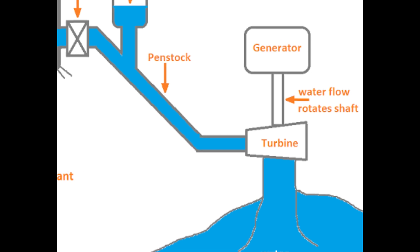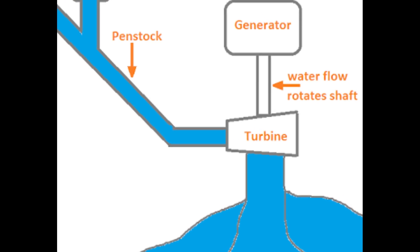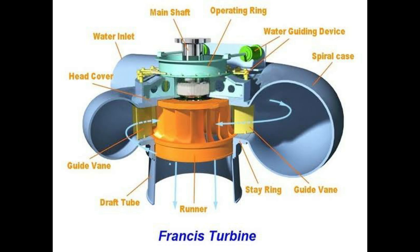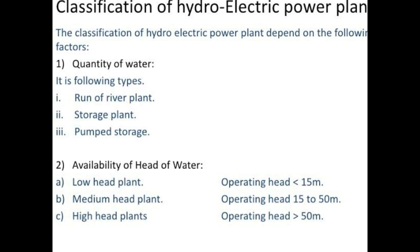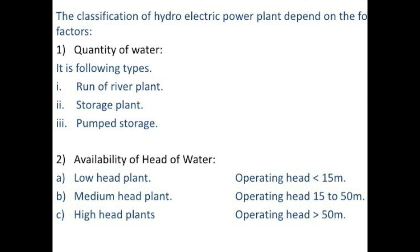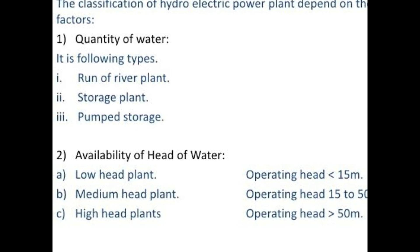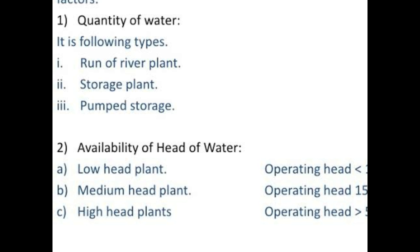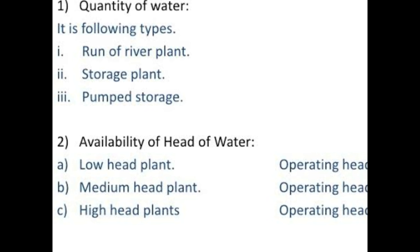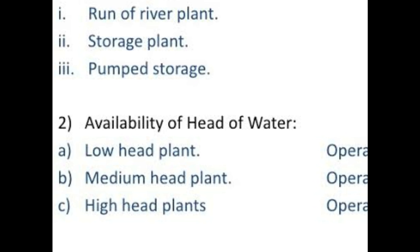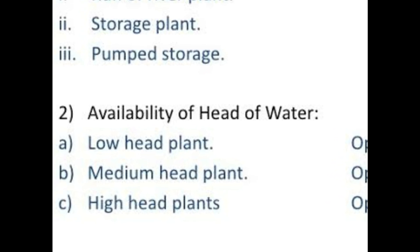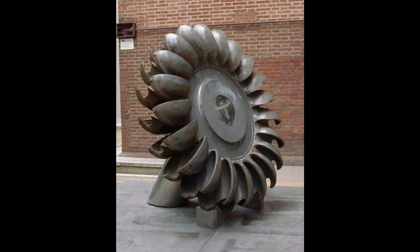There are 3 types of turbines: the Francis Turbine, Kaplan Turbine, and Pelton Wheel Turbine. These turbines are classified by head capacity — low head, medium head, and high head. The low-head and medium-head types correspond to the Kaplan and Francis Turbines.